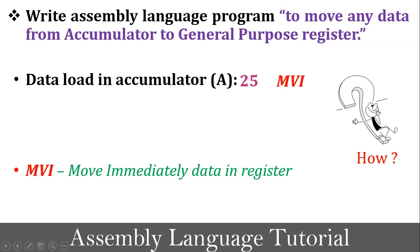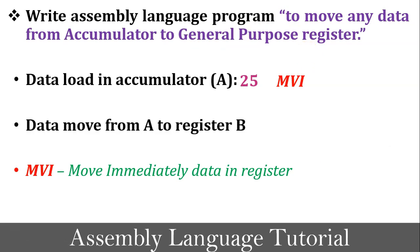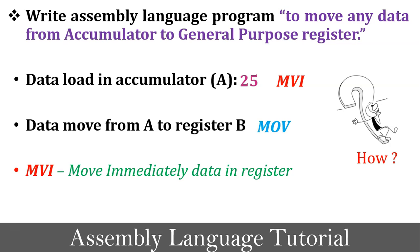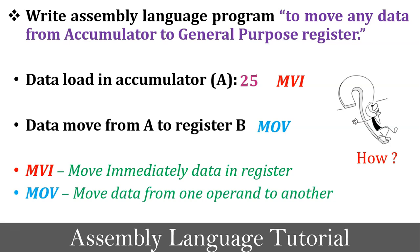Now moving back to the definition of the program: after data is loaded into the accumulator, the accumulator content is moved from the accumulator to a general purpose register. My second step is to move data from the accumulator to register B. The question is: how can I move data from the accumulator to general purpose register B? Using the MOV instruction, you can move data from the accumulator to any general purpose register, or from one general purpose register to another. The meaning of the MOV instruction is 'move data from one operand to another,' or move data from one register to another. So here my logic is created as per the given definition.